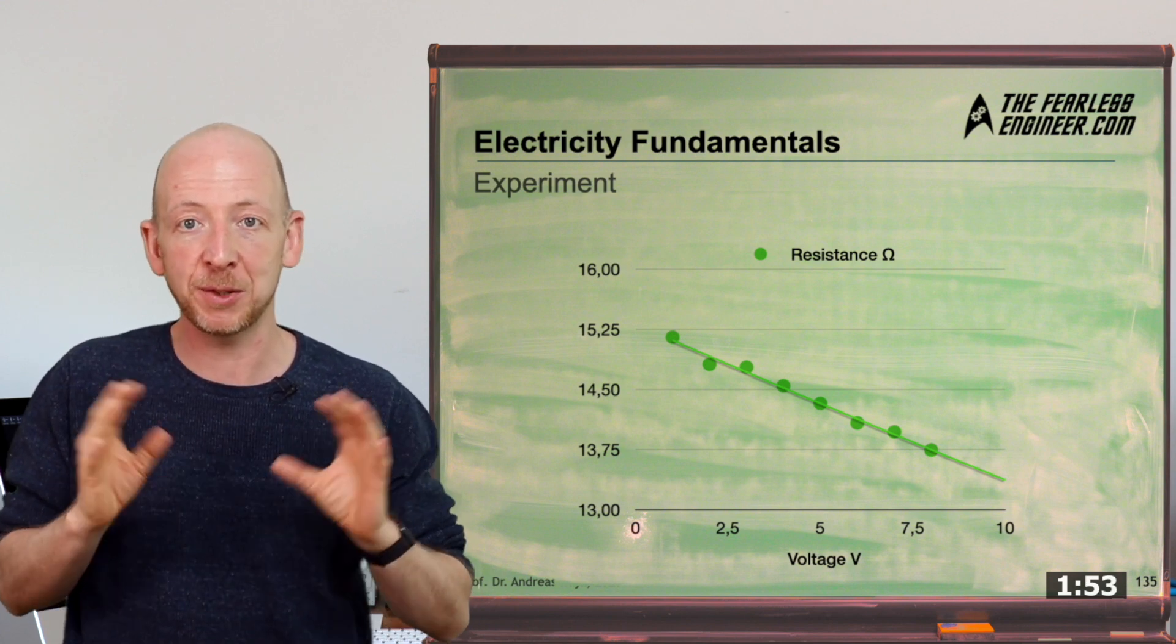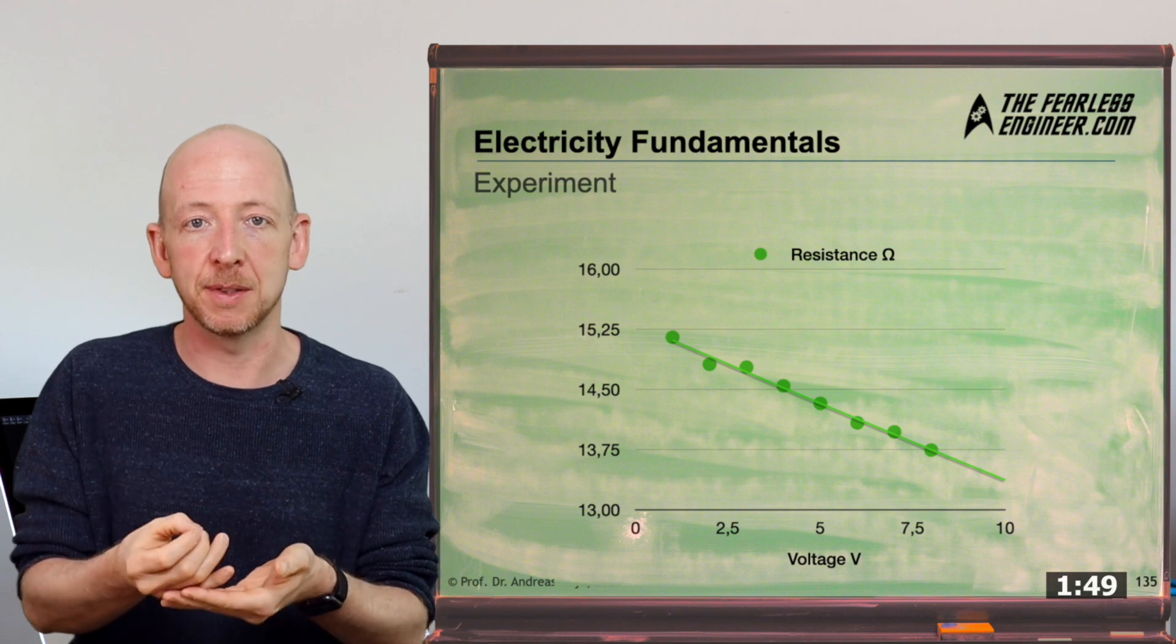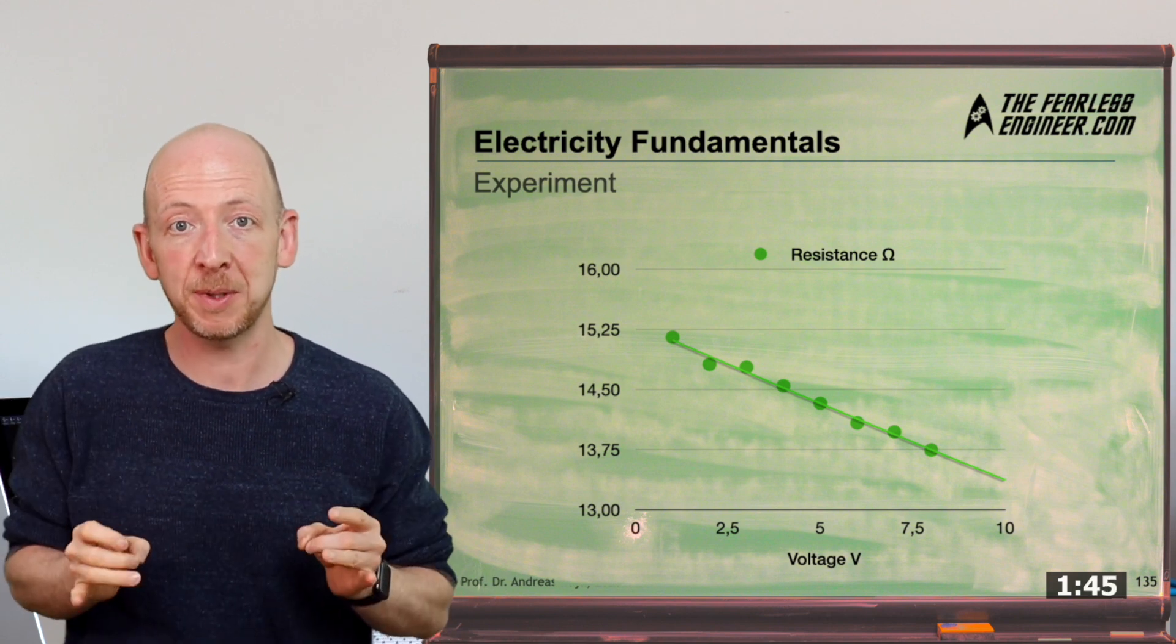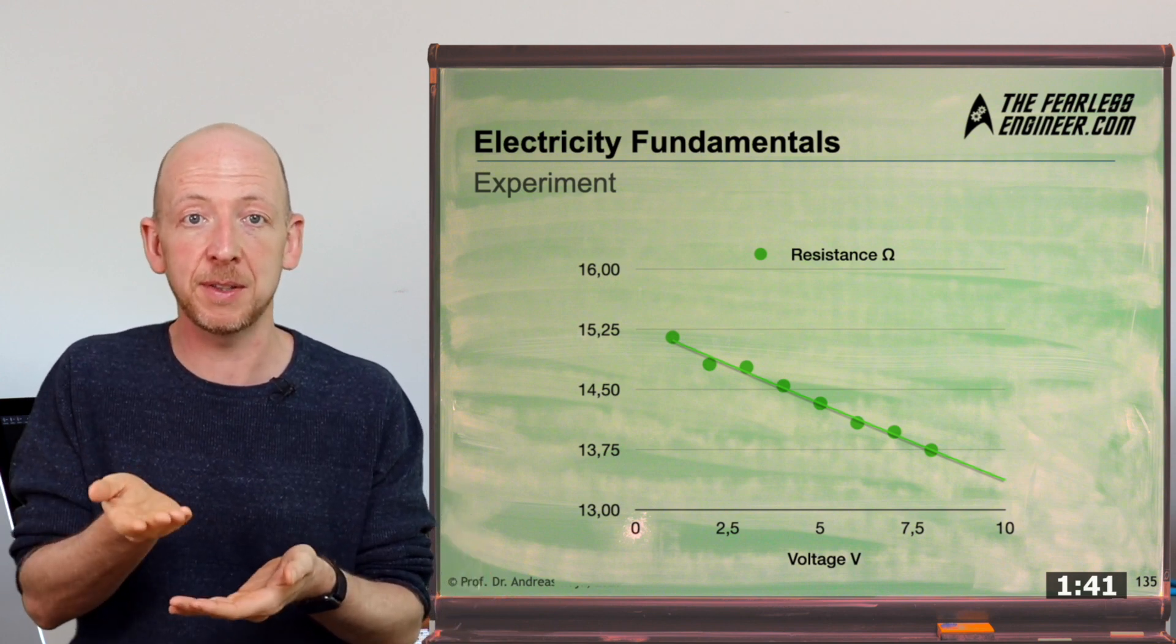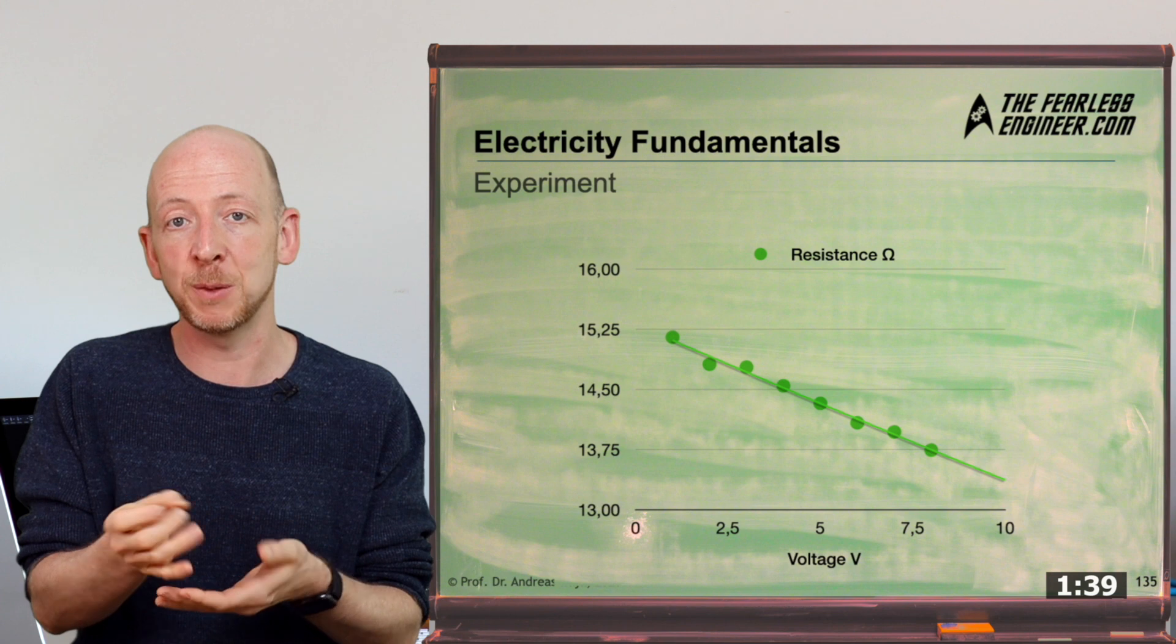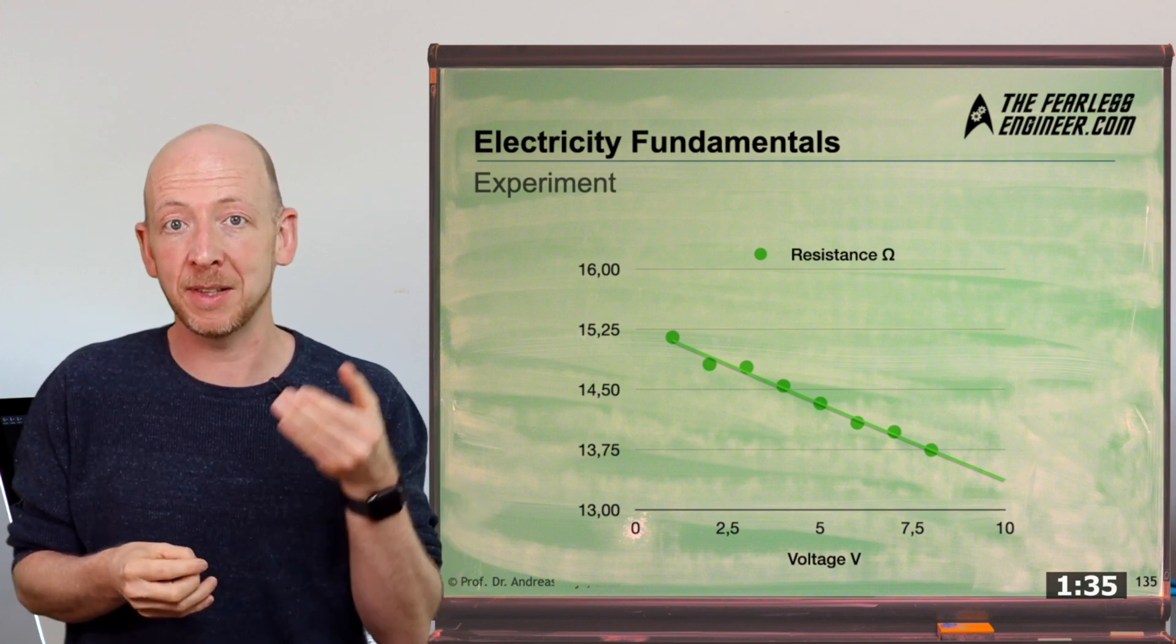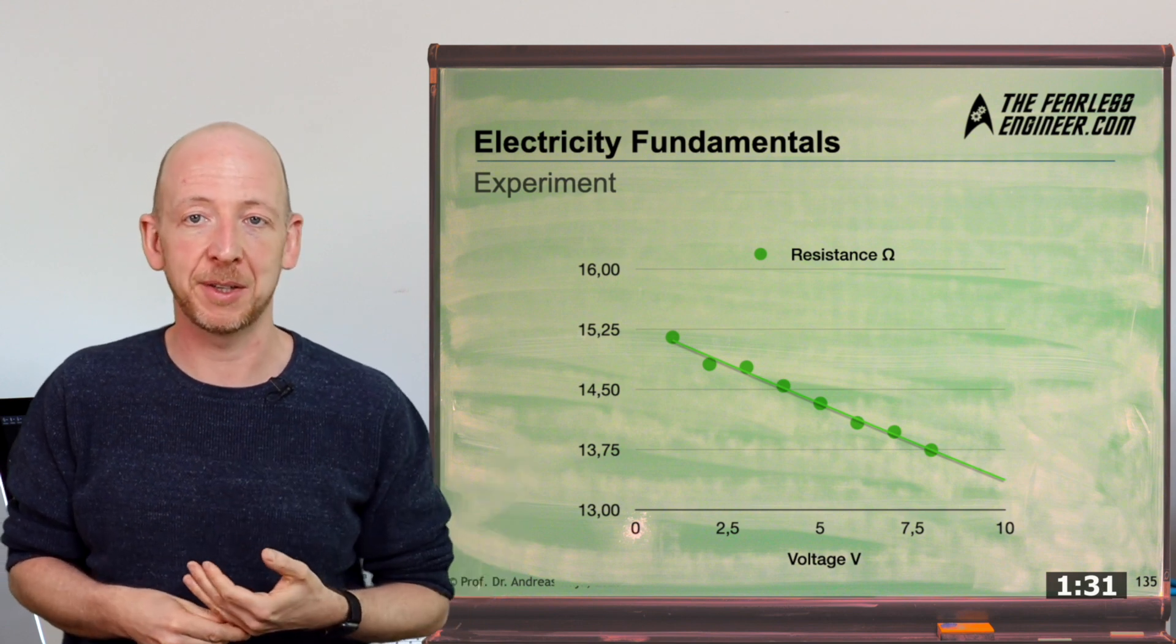By the way this behavior occurs with many electronic components and it's called positive differential resistance. The counterpart is called negative differential resistance. For our experiment here this means that with increasing voltage the current increases by a greater value than would be the case with a constant resistance value, which means that the resistor actually accelerated its own demise by leading through a higher current at the end.